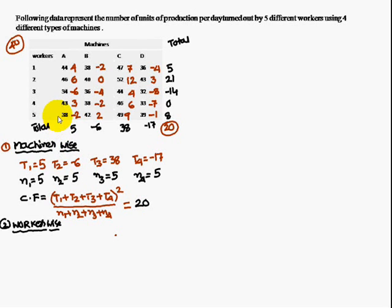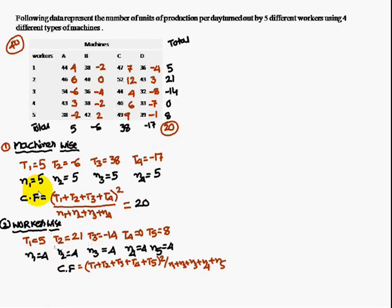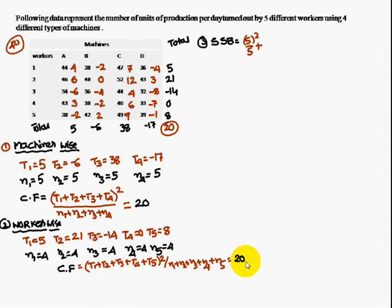Similarly, workers-wise, find T1 = 5, T2 = 21, T3 = minus 14, T4 = 0, T5 = 8. The n values for workers are n1 = 4, n2 = 4, n3 = 4, n4 = 4, n5 = 4. The correction factor using the same formula gives 20.